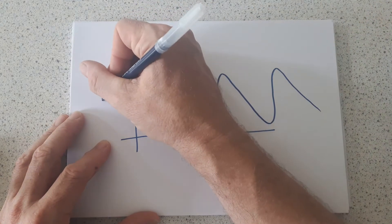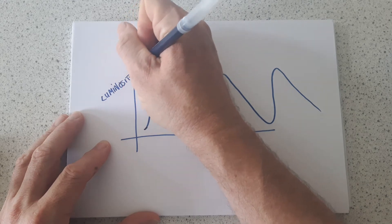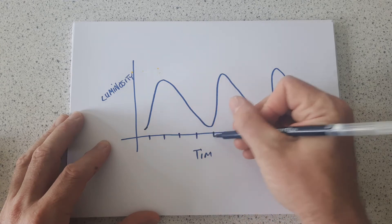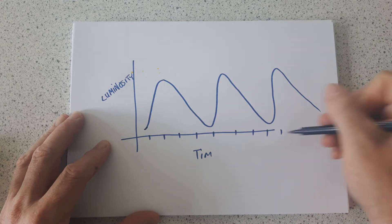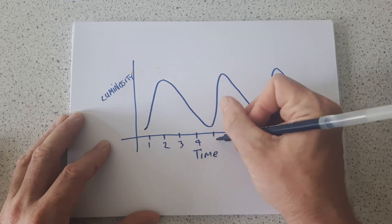So this is the luminosity of the star and this is time. So this might be a period of days for example. So one, two, three, four, five, six.